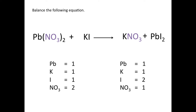Lead is the same on each side, potassium is the same on each side. For iodine, I have one on the reactant side and two on the product side, so I'll put a 2 in front of KI on the reactant side. That changes potassium to two and iodine to two. Now I have two potassium on the reactant side but only one on the product side, so I'll put a 2 in front of KNO3 on the product side, giving two potassium and two nitrate groups on the product side.